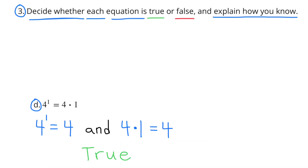D: 4 to the power of 4 times 4 to the power of 1 equals 4. Well, 4 to the power of 1 equals 4, and 4 times 1 also equals 4. So this equation is true.